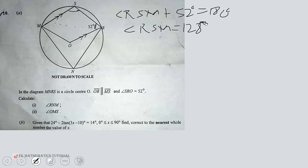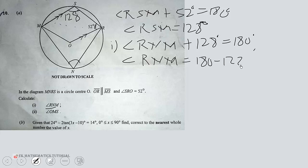If this is 128, then we can find this angle because in cyclic quadrilaterals, the opposite angles are supplementary. So angle RNM plus angle RSM, which is 128 degrees, should equal 180 degrees. Therefore, angle RNM equals 180 minus 128 degrees, which is 52 degrees.